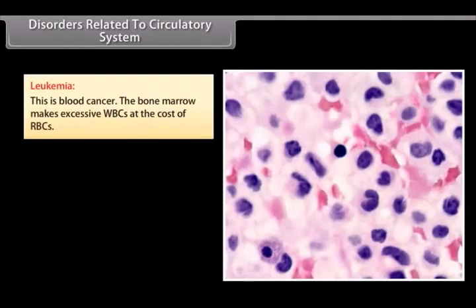Leukemia. This is blood cancer. The bone marrow makes excessive WBCs at the cost of RBCs.